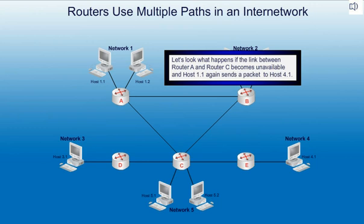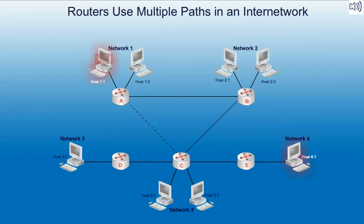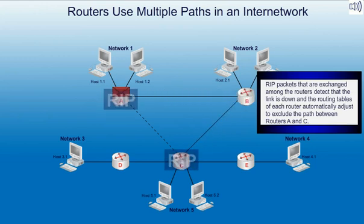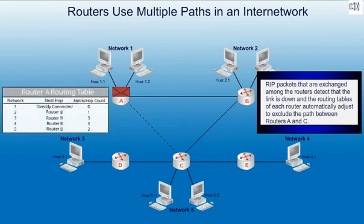Let's look at what happens if the link between router A and router C becomes unavailable, and host 1.1 again sends a packet to host 4.1. RIP packets that are exchanged among the routers detect that the link is down, and the routing tables of each router automatically adjust to exclude the path between routers A and C.